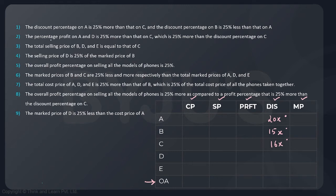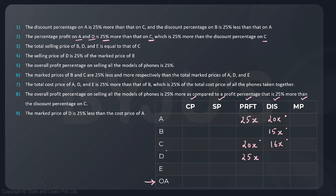The percentage profit on A and D is 25% more than that on C, which is 25% more than the discount percentage on C, which is 16x. So profit percentage on C is 25% more than 16x, giving 20x. Profit percentage on A and D is 25% more than 20x, giving 25x each. So we are able to work on all these things with one single variable x.